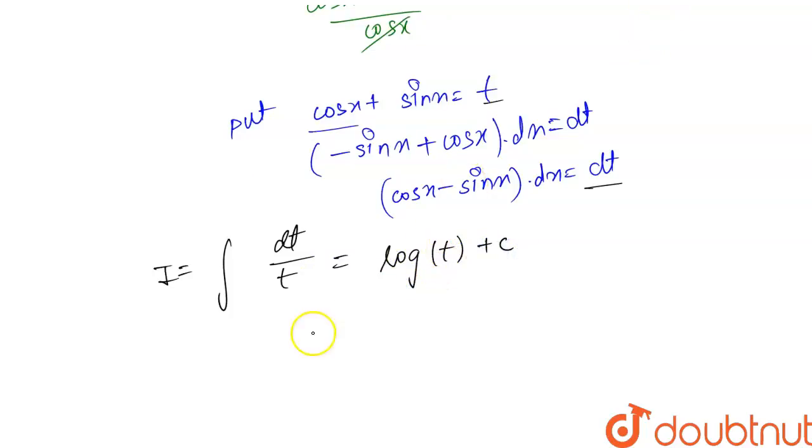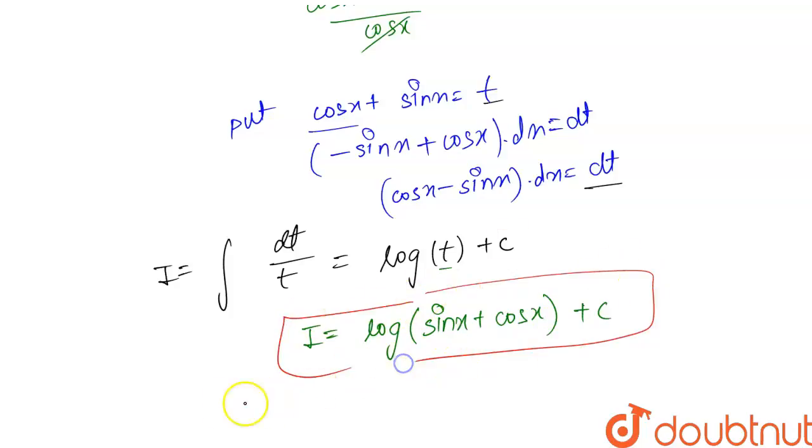So our i becomes equal to log of, now put the value of t which is sin x plus cos x plus c where c is an integrating constant. So here the answer for the above integral is log sin x plus cos x.